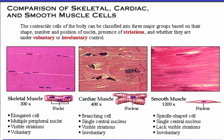Smooth muscle cells possess a single nucleus within a spindle-shaped cell. These cells do not have visible striations. Like cardiac muscle, smooth muscle is under involuntary control. The focus of this module will be on the physiology of skeletal muscle.